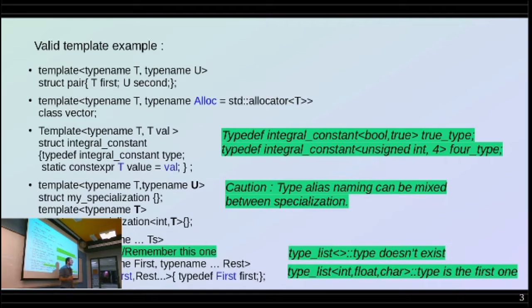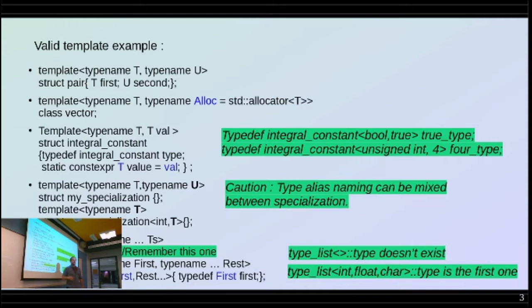Technically, an integral_constant is simply a static context for T value equal to the value that you provide. So for example, integral_constant of bool and true is the default true_type, and bool and false is the default false_type. When you access integral_constant, most of the time you want to access the value — you say double-colon value, and then it's true or false depending on your logic. But everything else derives from it.